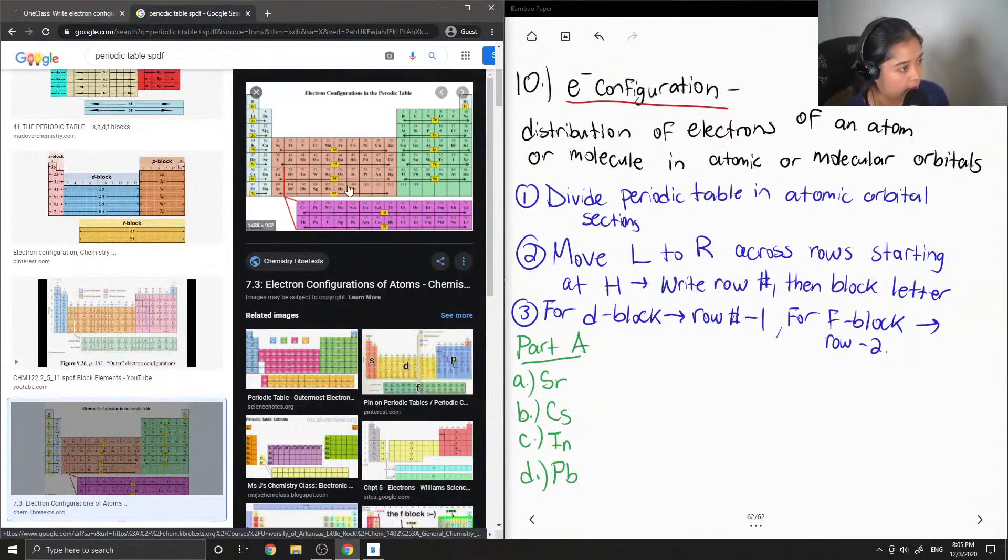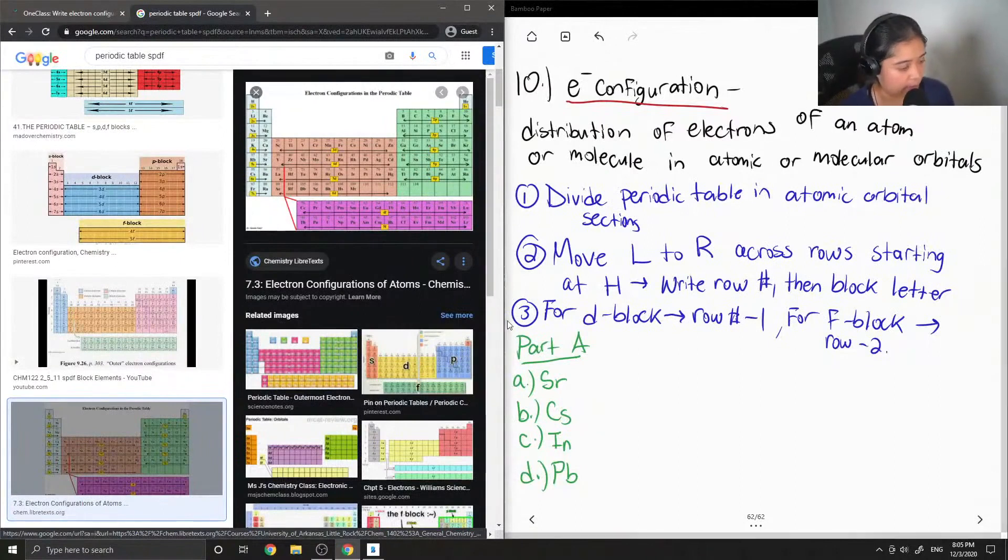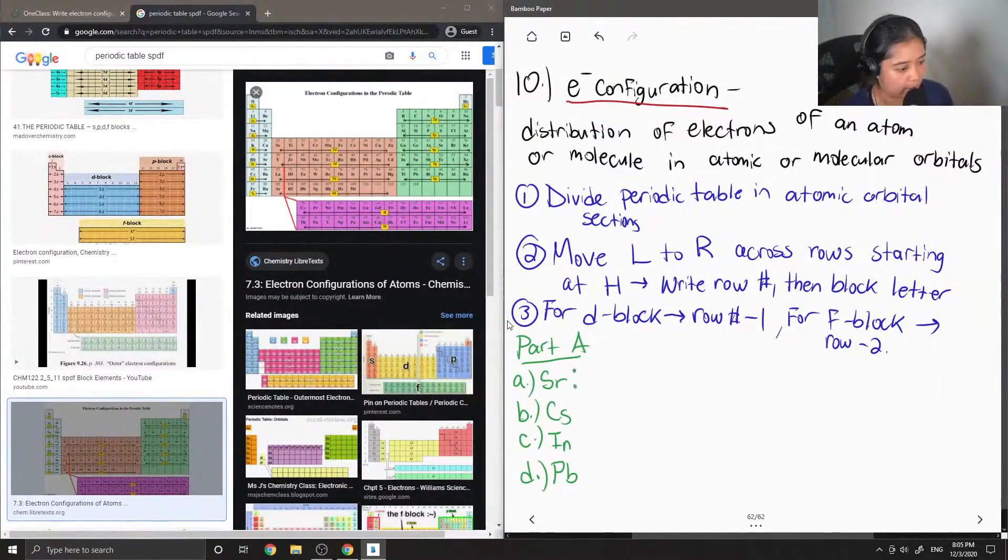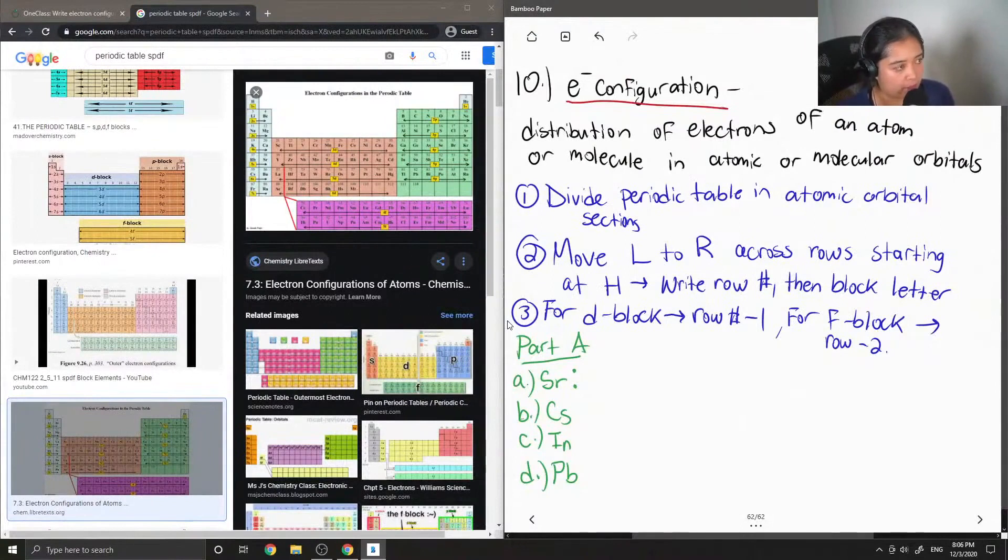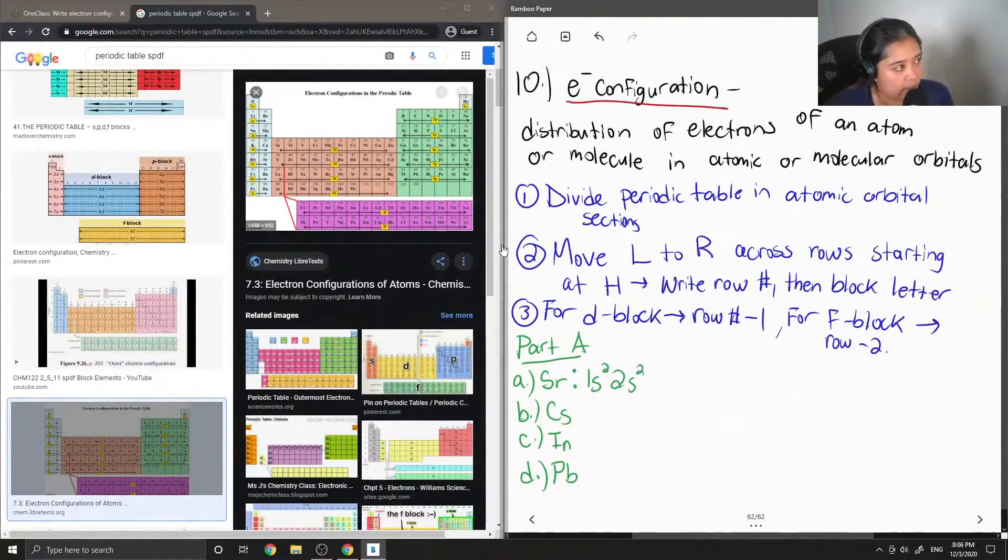So let's find our first element. So strontium is found all the way here. So I'm going to write the long electron configuration just for the first example just so we can see how to do it. So moving left to right across the rows starting at hydrogen, I'm going to write 1s and then 2. So the 2 means it has both, it stands for both the hydrogen and the helium. And then going to our next row, 2s2. So this brings us to beryllium. And then hopping on over, 2p6,